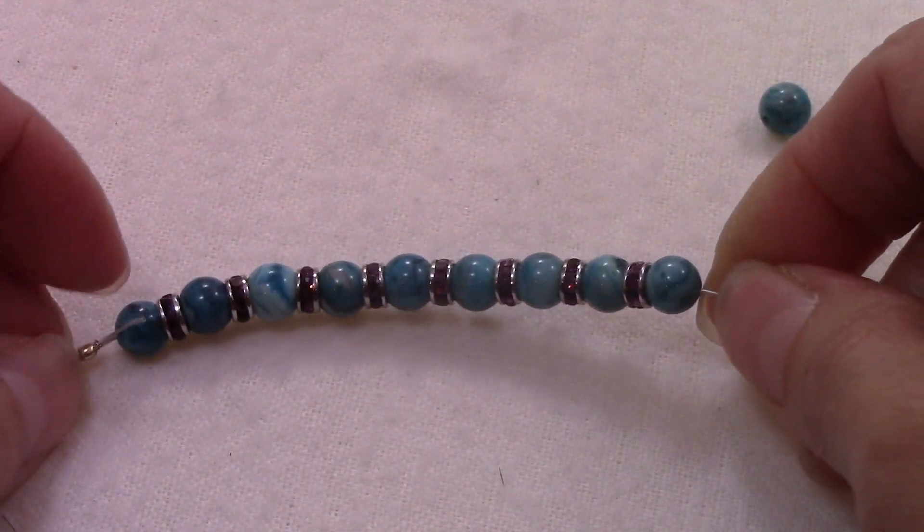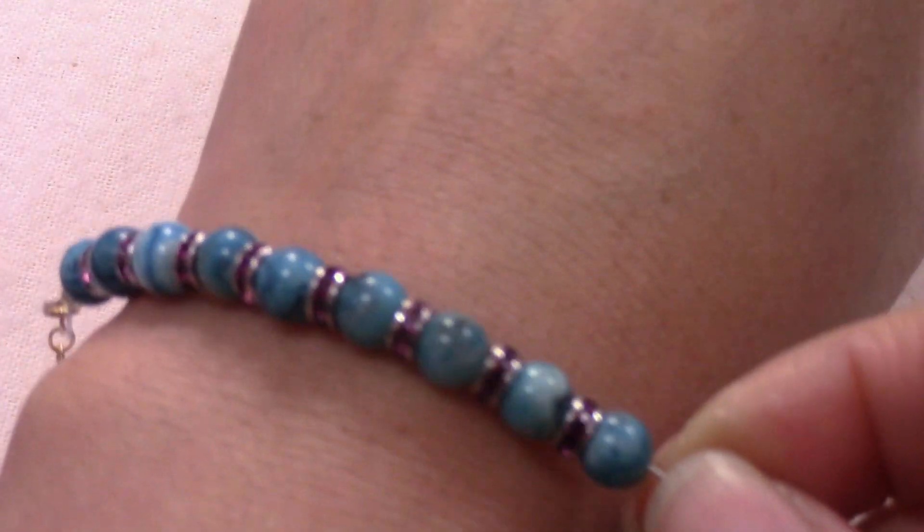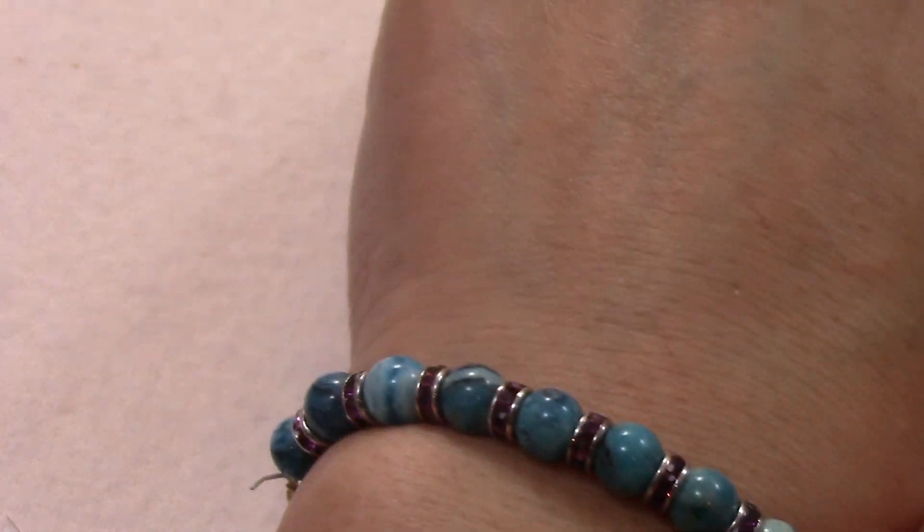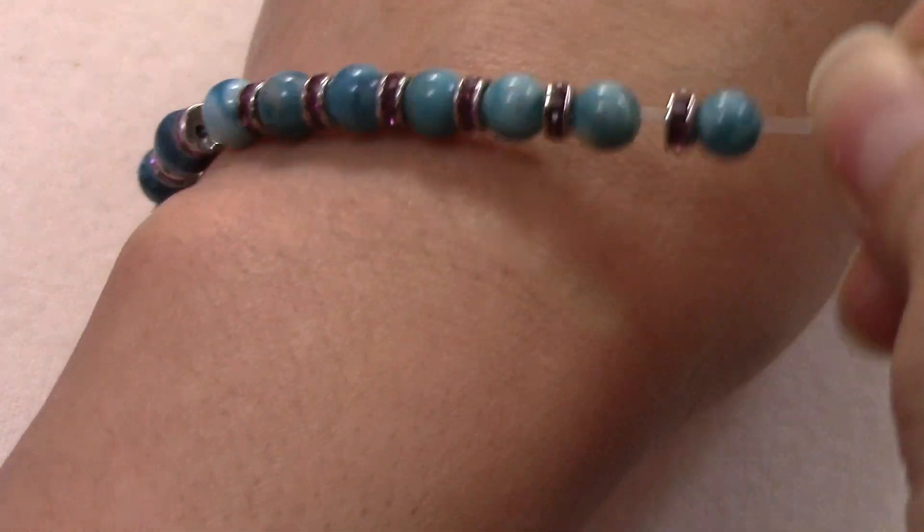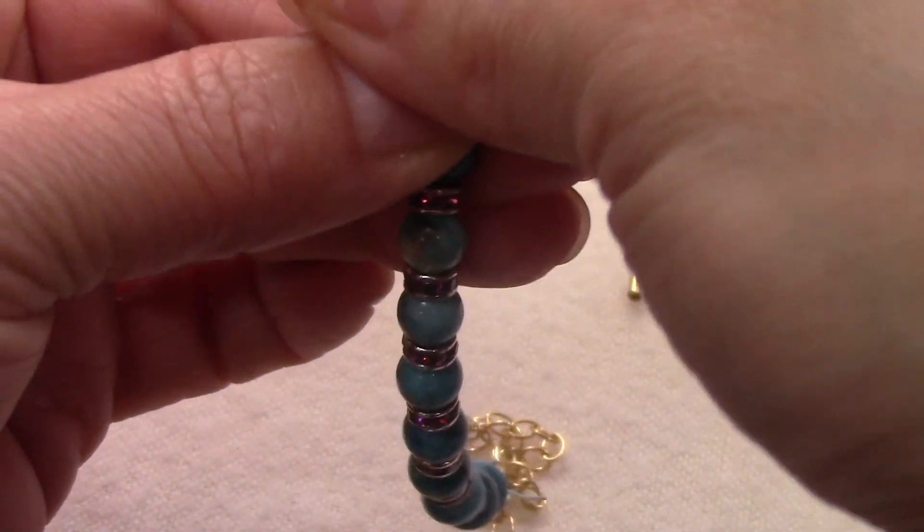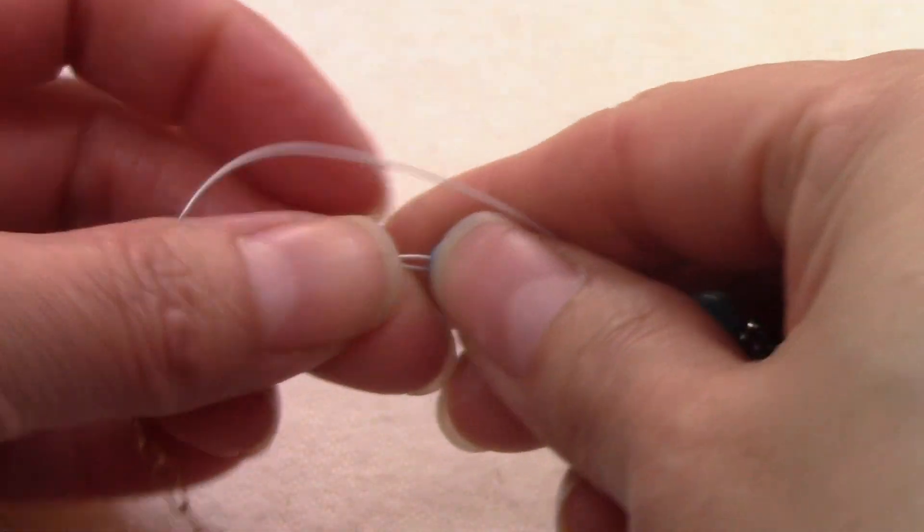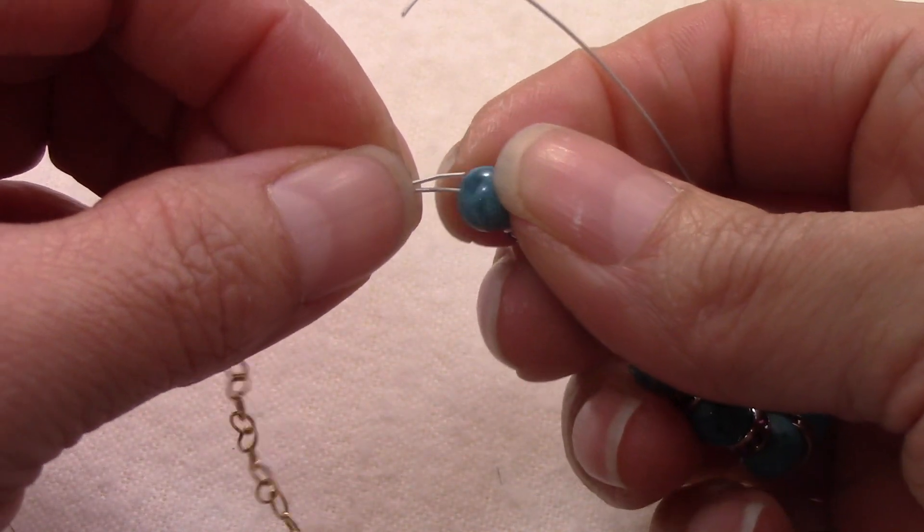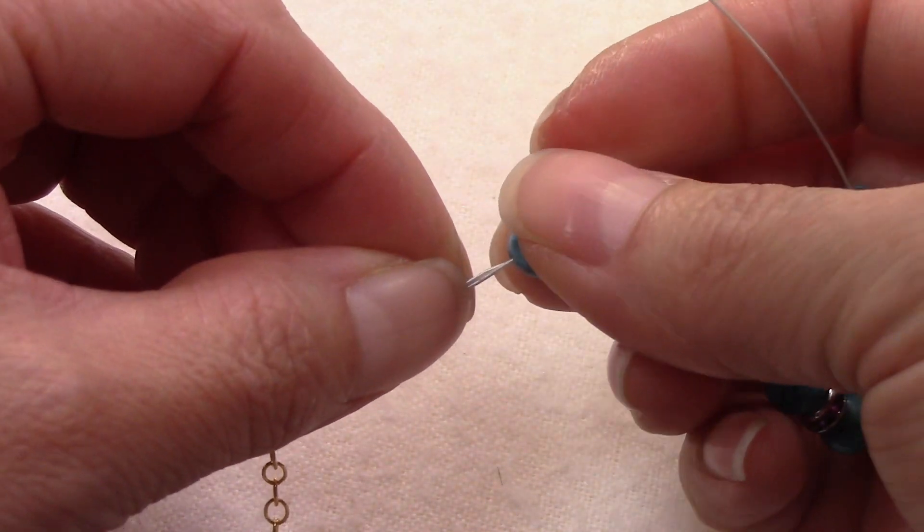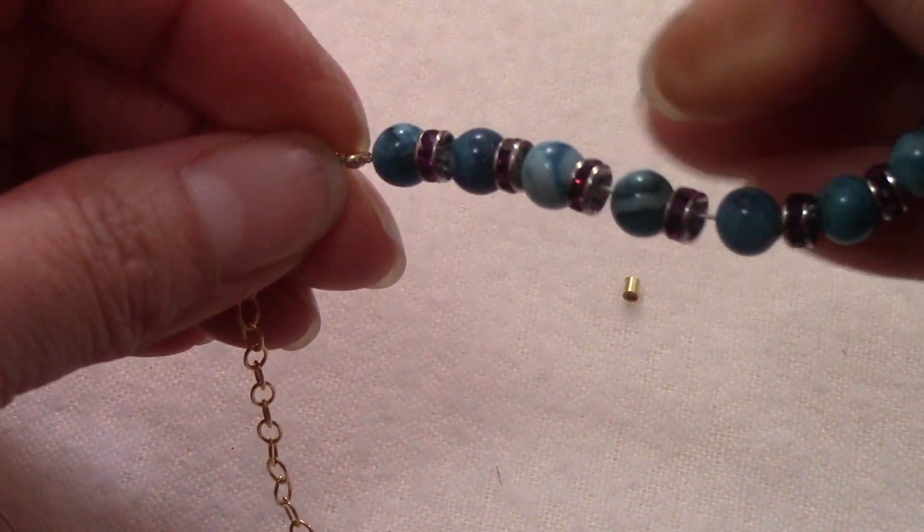So I string 9 beads. If you want to string more you can string more. If you want less you can do less. For me I think that's perfect. So make sure you pass the end of the other wire through your beads. You can always trim it if you think it's too long.